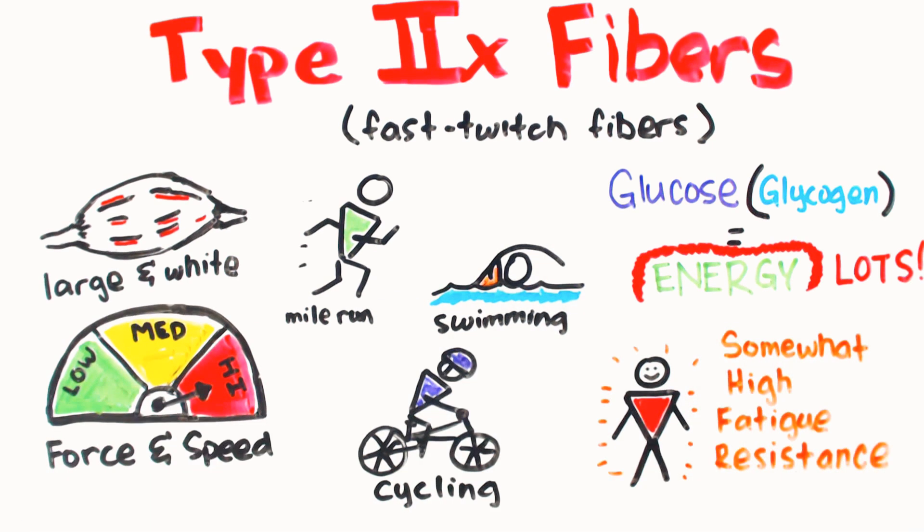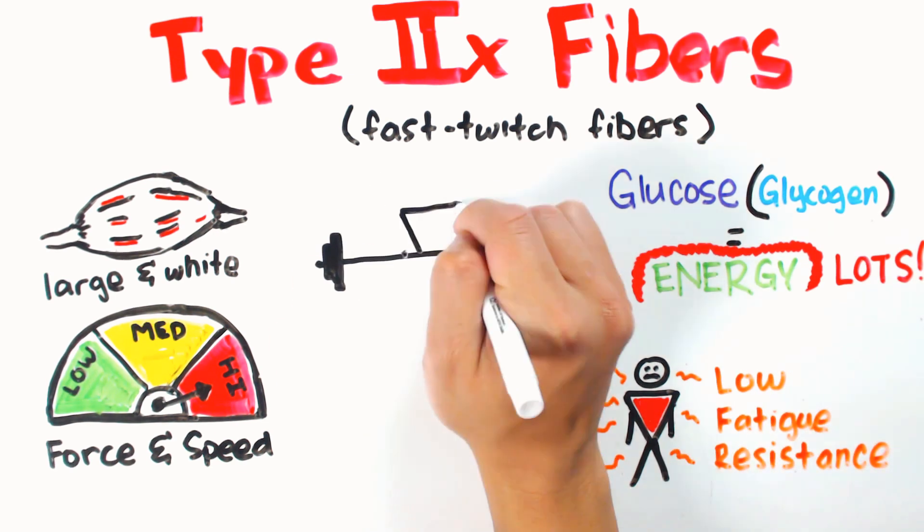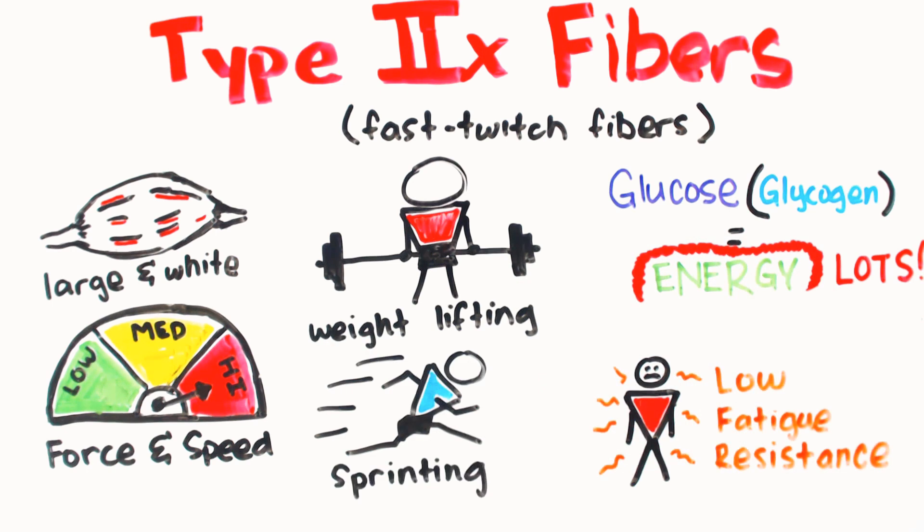The downside though is that the fiber fatigues quickly, burning out after 15 to 30 seconds. High impact, heavy resistance activities such as lifting weights and sprinting will activate Type 2x fibers the most.